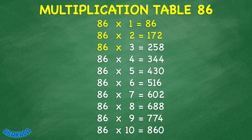86 times 3 equals 258. 86 times 4 equals 344. 86 times 5 equals 430. 86 times 6 equals 516. 86 times 7 equals 602. 86 times 8 equals 688. 86 times 9 equals 774.